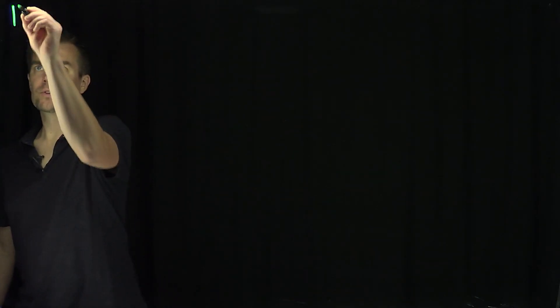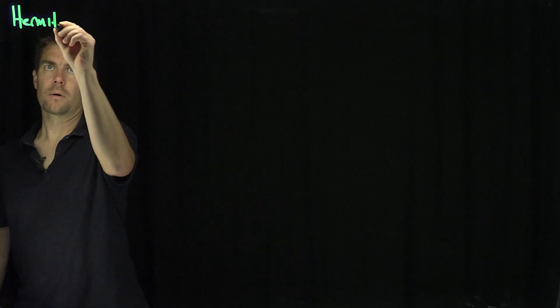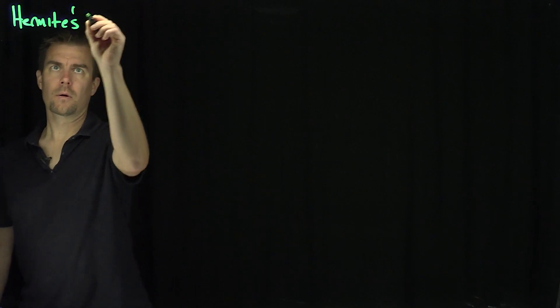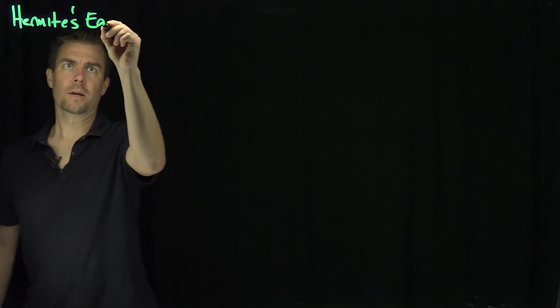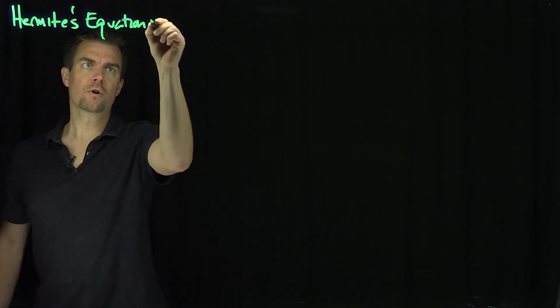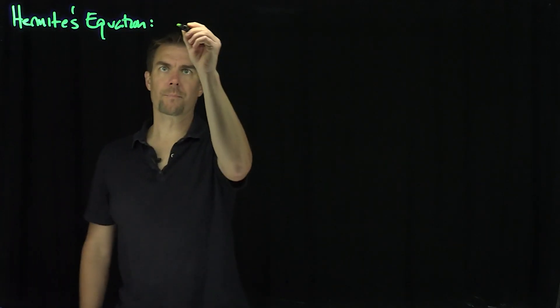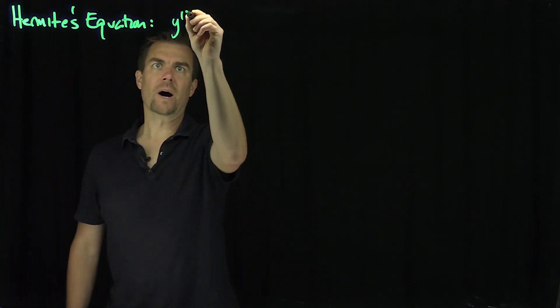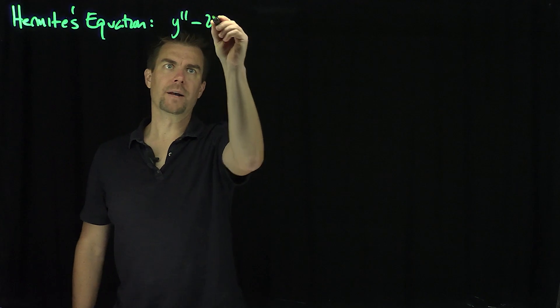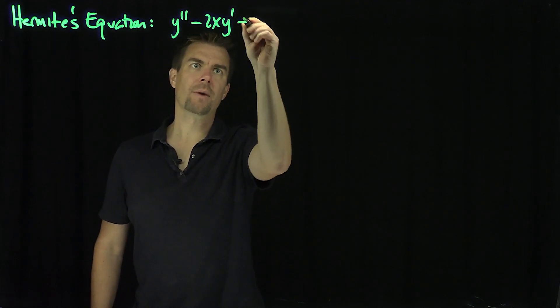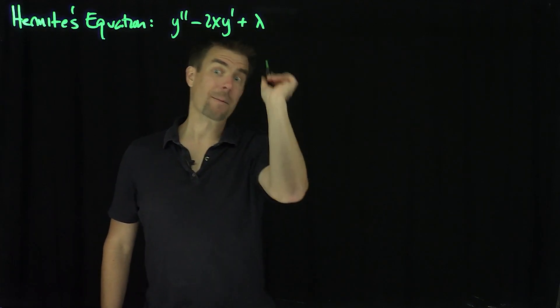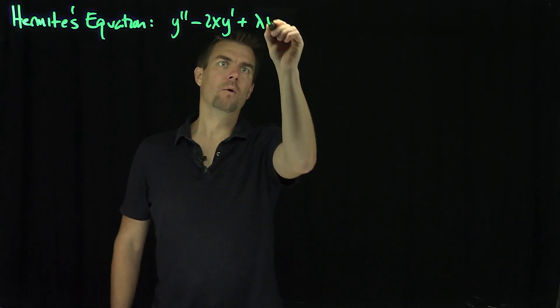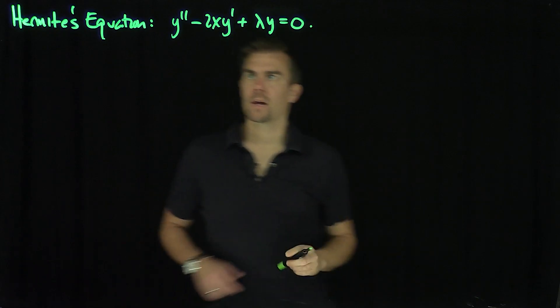Hello, students. In this video, we'll discuss Hermite's equation. Hermite's equation is a second-order differential equation which has the following form: y double prime minus 2xy prime plus a parameter lambda y is equal to 0.